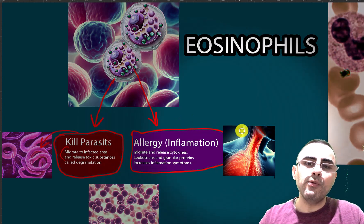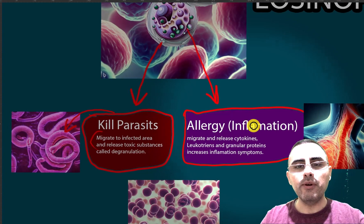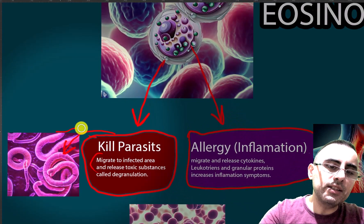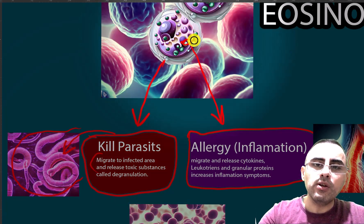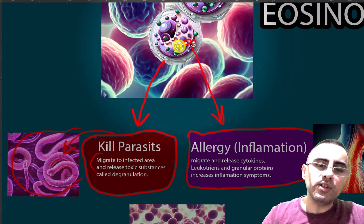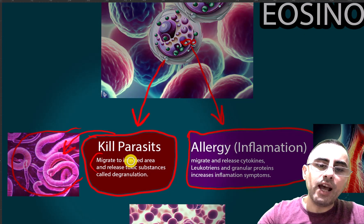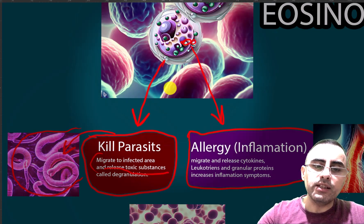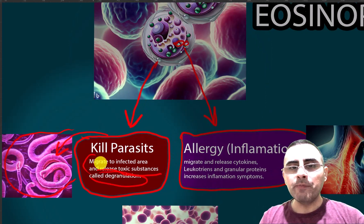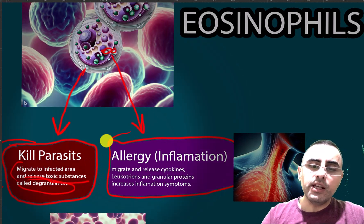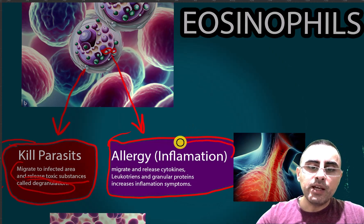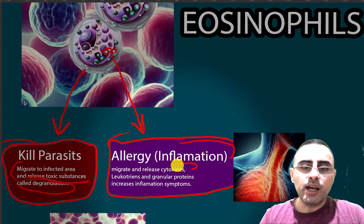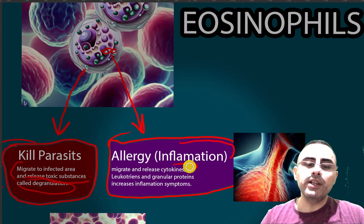Eosinophils are part of white blood cells. They have two main roles. First is to kill parasites such as worms. Eosinophils contain small vesicles called granules; inside them is a toxic substance. They migrate and attack the infected area and release this toxic substance — this is called degranulation. Another role of eosinophils is allergy and inflammation.